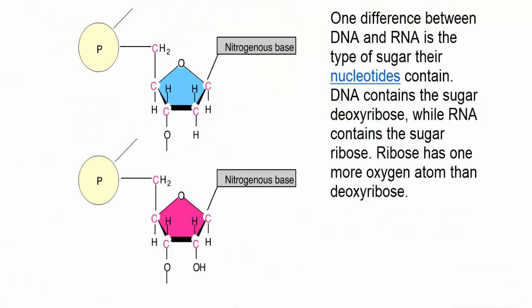One difference between DNA and RNA is the type of sugar their nucleotides contain. DNA contains the sugar deoxyribose, while RNA contains the sugar ribose. Ribose has one more oxygen atom than deoxyribose.